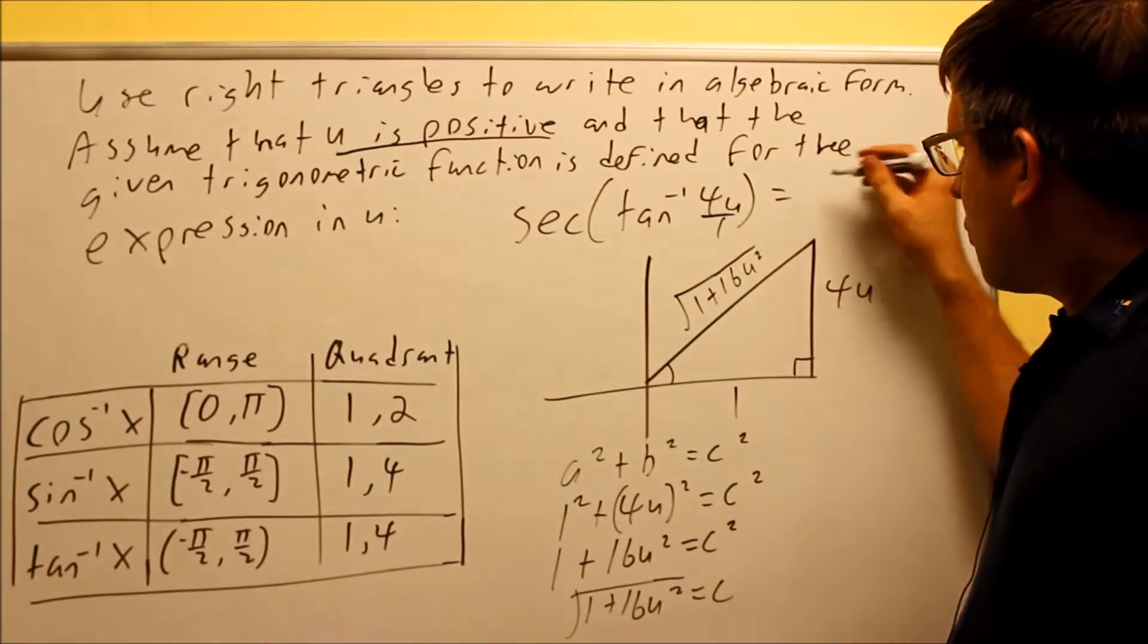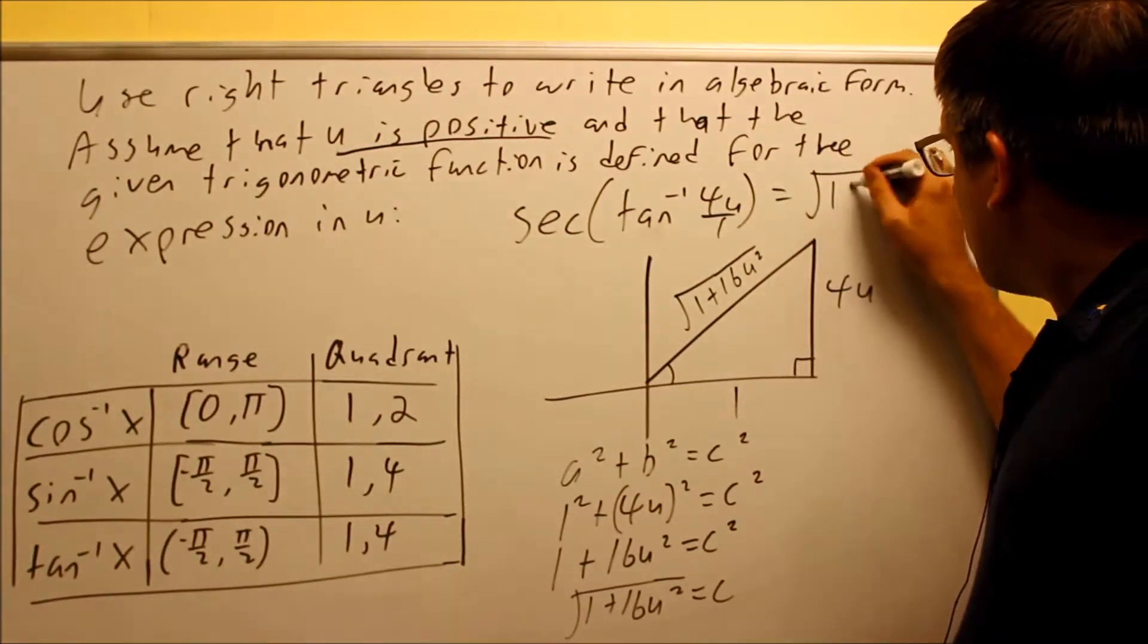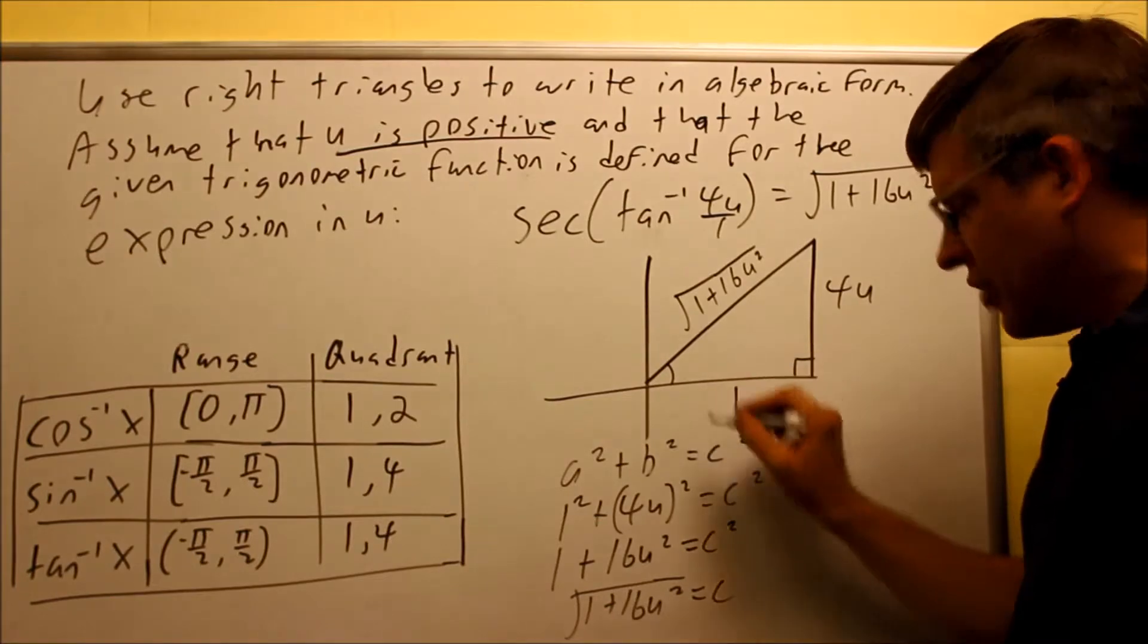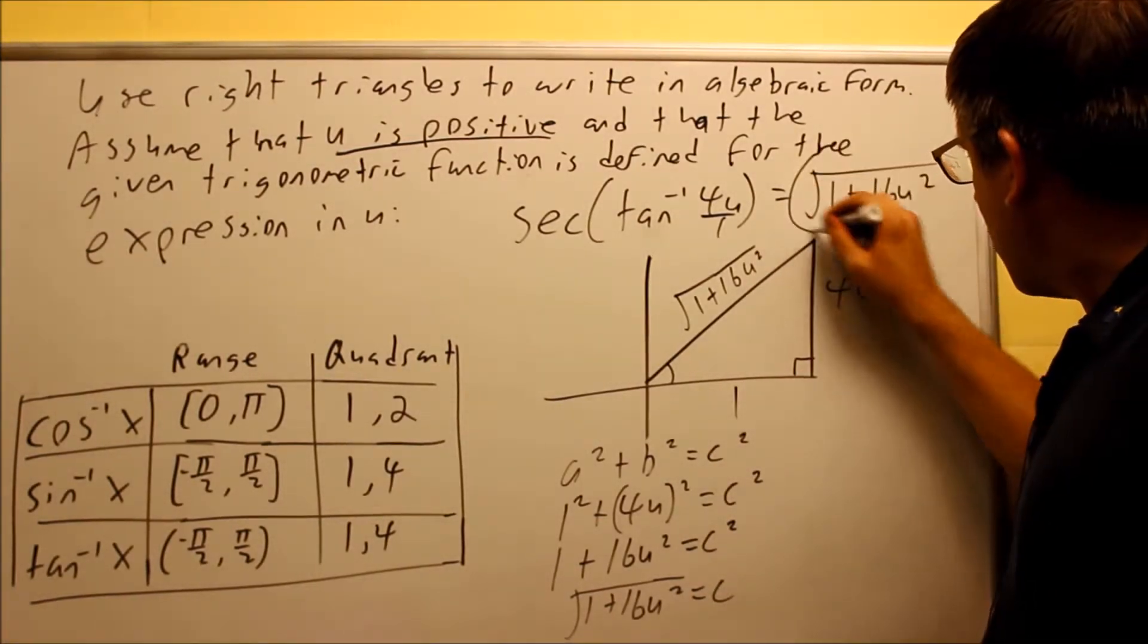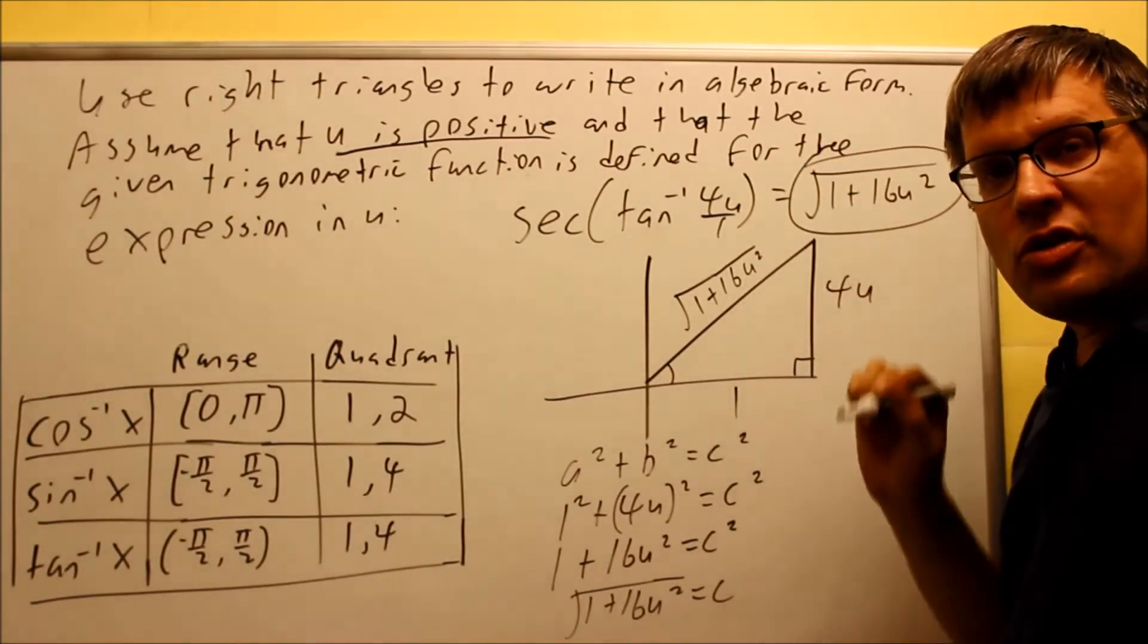So if you want to write the expression, the answer for the whole problem, it's going to be square root of 1 plus 16U squared divided by 1, but because we're divided by 1, we don't need to show that. So therefore, the answer to the whole entire problem is this.